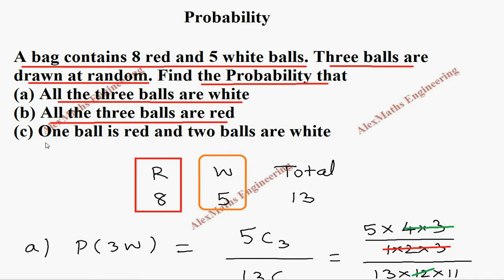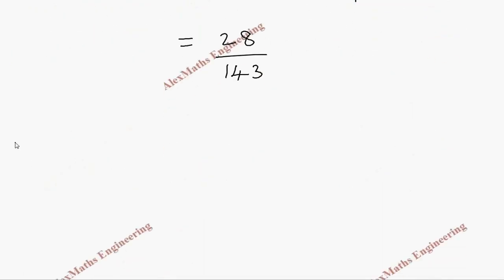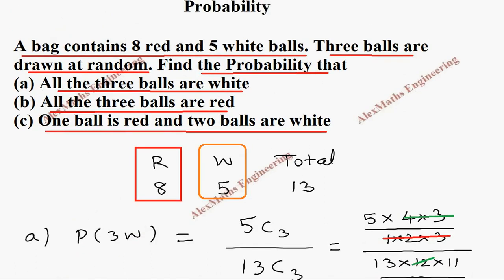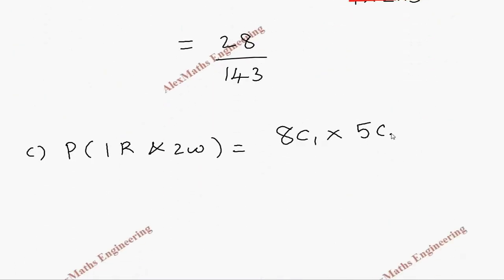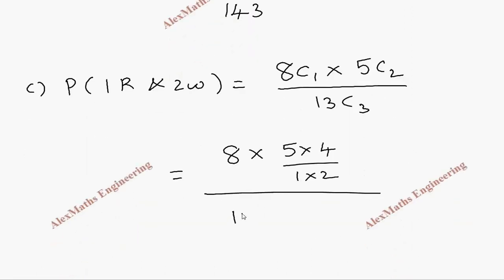Coming to part C, they ask: 1 ball is red and 2 balls are white. The 1 red will come from the 8 red balls and 2 white will come from the available 5 white balls. So P of 1 red and 2 white is 8C1 into 5C2, divided by 13C3. 8C1 is 8, 5C2 is 5 into 4 by 1 into 2.